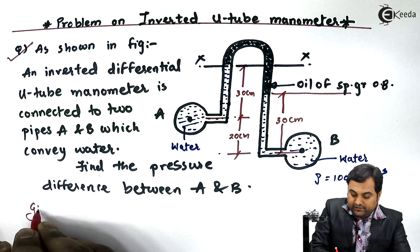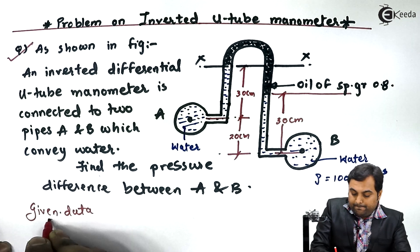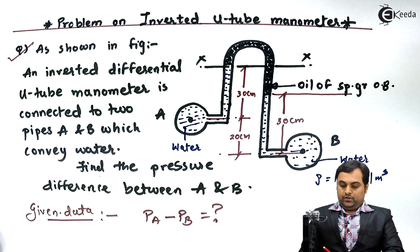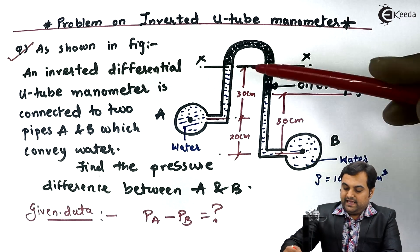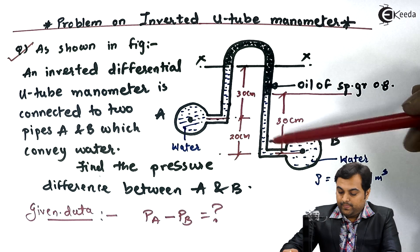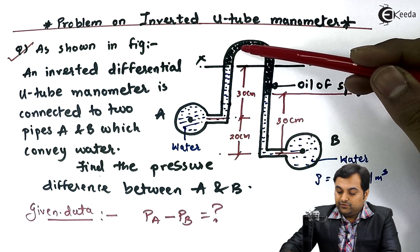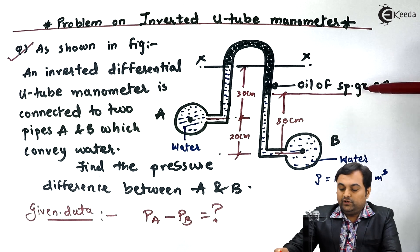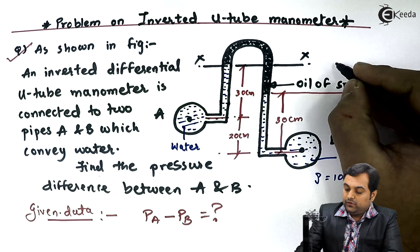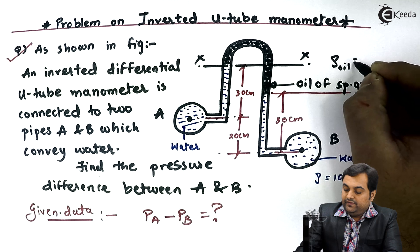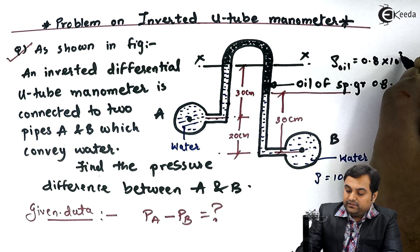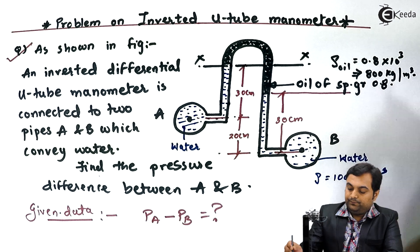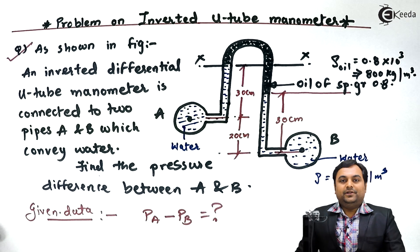We have to find out the pressure difference between pipeline A and B. For water in pipeline B, the density is 1000 kg per meter cube. Similarly, in pipeline A we have water with the same density of 1000 kg per meter cube. The manometer fluid is oil with specific gravity 0.8, so density of oil equals 0.8 × 1000 = 800 kg per meter cube.